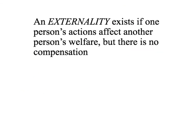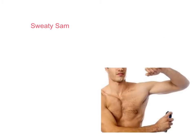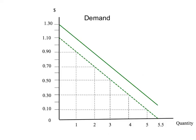To remind you of our definition one more time: an externality exists if one person's actions affect another person's welfare, but there is no compensation. Let's start off with a case of a positive externality. Once again, let's think about Sweaty Sam, who has a problem with his sweat and smell. He uses a deodorant, but people wish he would use more. There's a positive externality of 20 cents per squirt — every time Sam uses an extra squirt of deodorant, his co-workers gain the equivalent of 20 cents on that extra squirt.